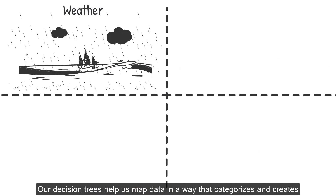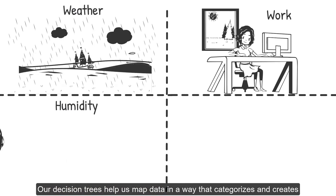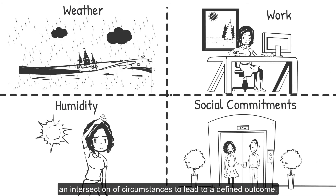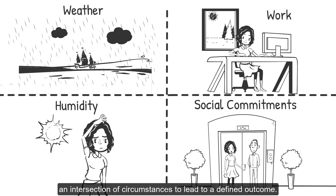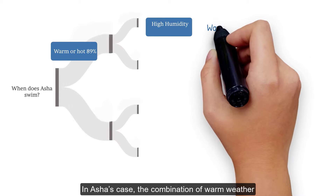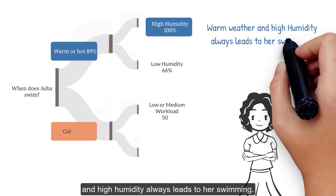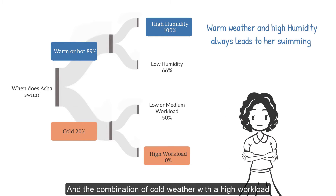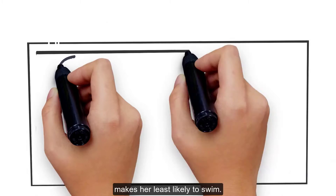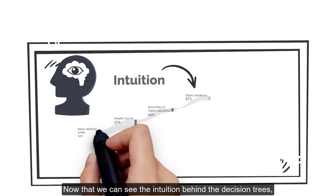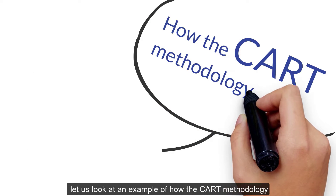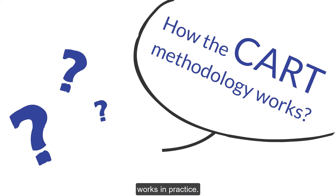Our decision trees help us map data in a way that categorizes and creates an intersection of circumstances to lead to a defined outcome. In Asha's case, the combination of warm weather and high humidity always leads to her swimming, and the combination of cold weather with a high workload makes her least likely to swim. Now that we can see the intuition behind the decision trees, let us look at an example of how the CART methodology works in practice.